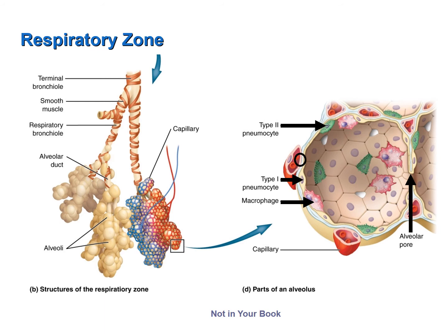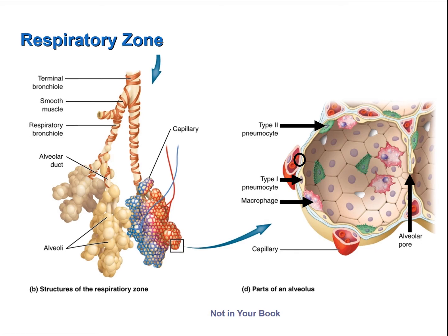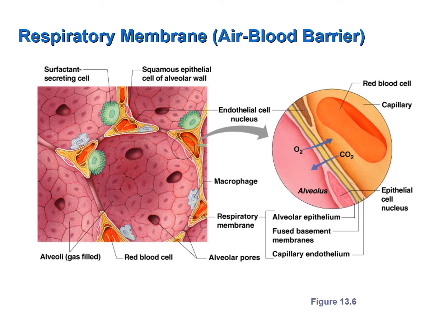Now let's focus on the wall of the alveolus where it connects to the wall of a capillary. This is called the respiratory membrane, and it is across this respiratory membrane that gas exchange occurs between the air in the alveolus and the blood in the pulmonary capillary. This figure does a great job of showing the respiratory membrane. It is composed of simple squamous epithelial cells making up the walls of the alveoli and simple squamous epithelial cells making up the walls of the capillaries, and they share a common basement membrane. This very thin respiratory membrane allows for the diffusion of oxygen and carbon dioxide down their concentration gradients, as oxygen is loaded into the blood of the pulmonary capillaries and carbon dioxide is unloaded.